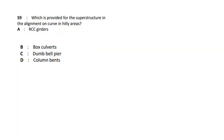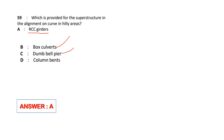Which type of superstructure is provided for alignment on a curve in hilly areas? In hilly areas, we can align the curve in a superstructure. The answer is RCC grid. We use RCC grid box, dumbbells, and columns. The answer is option A.